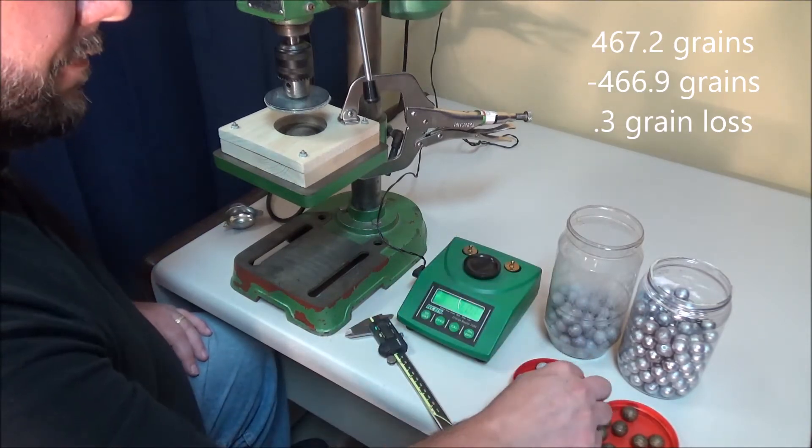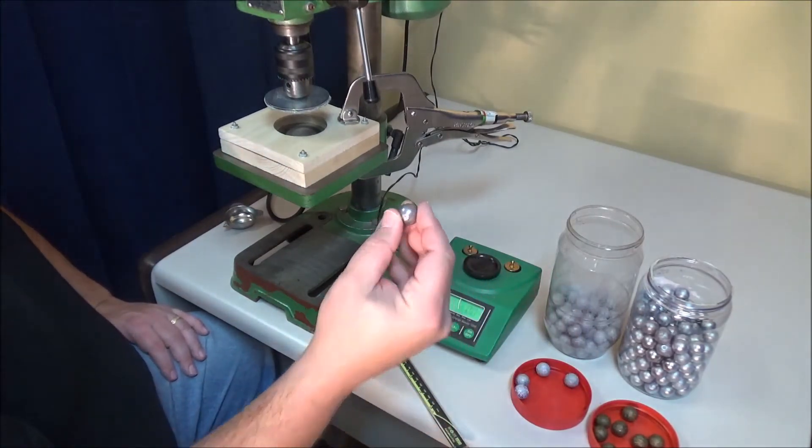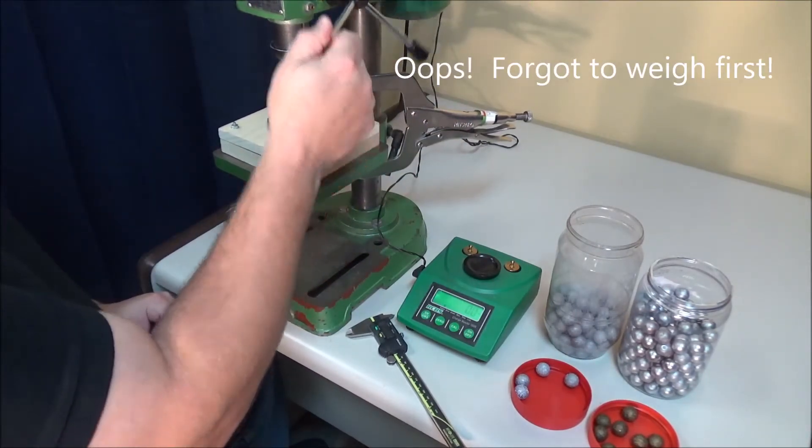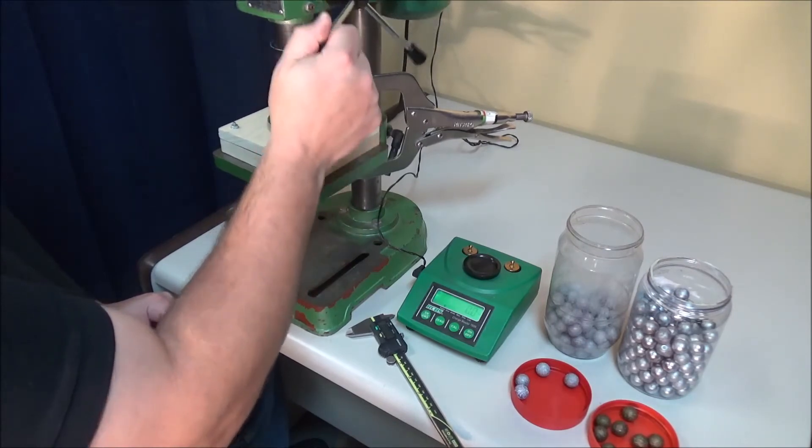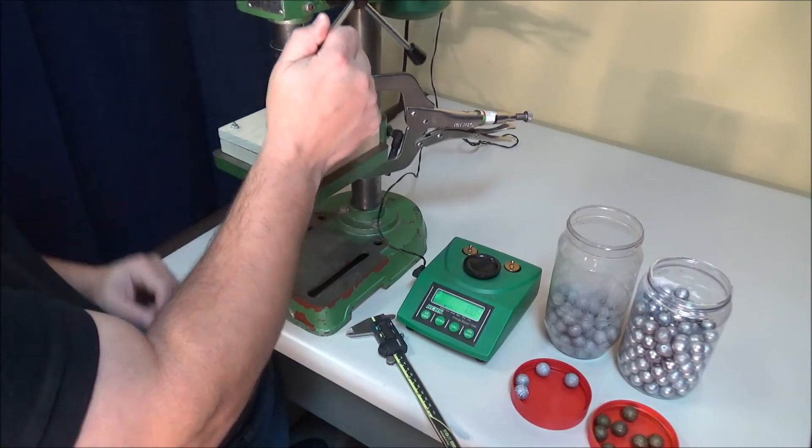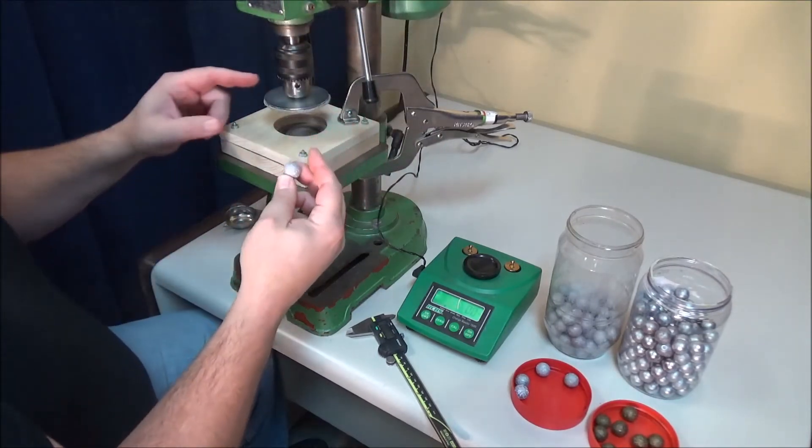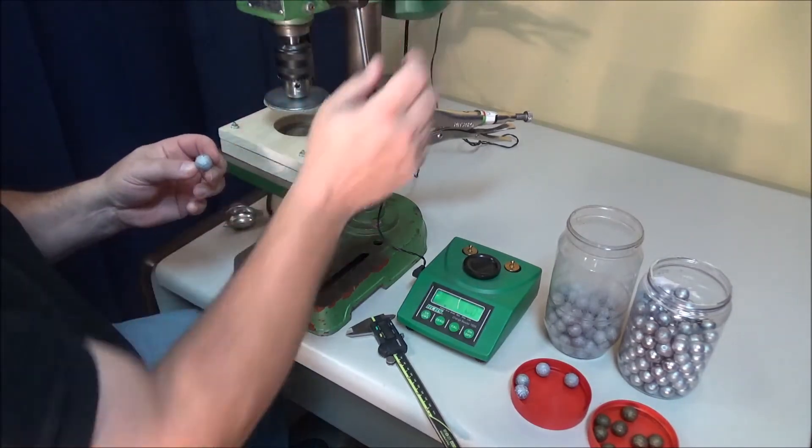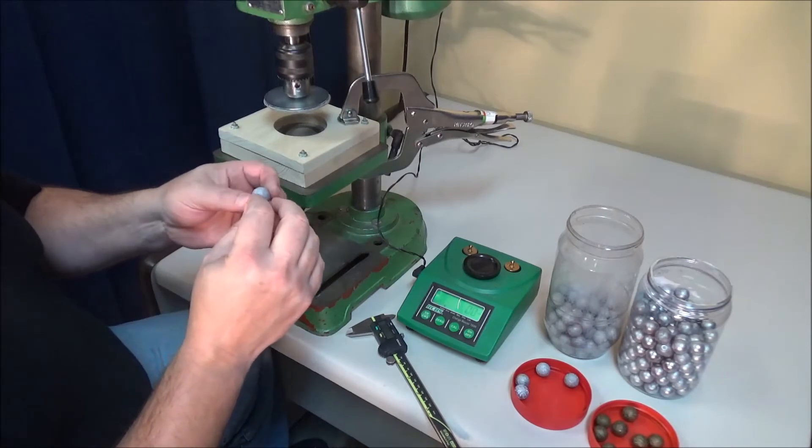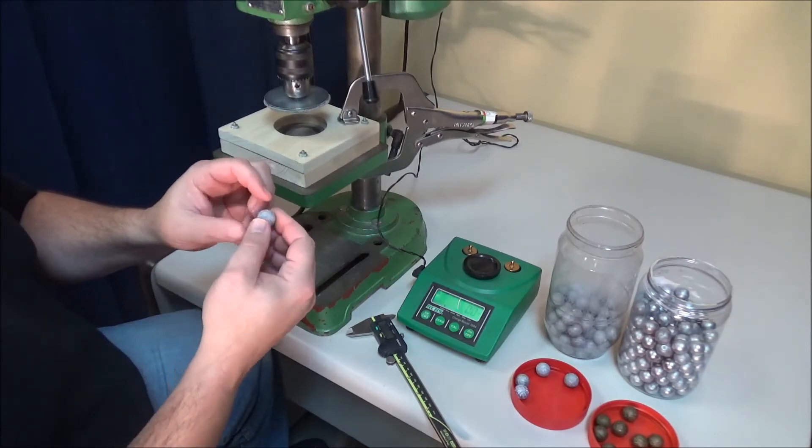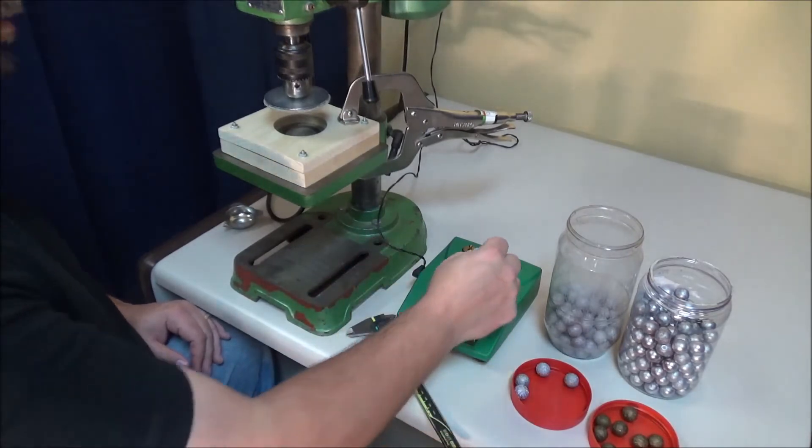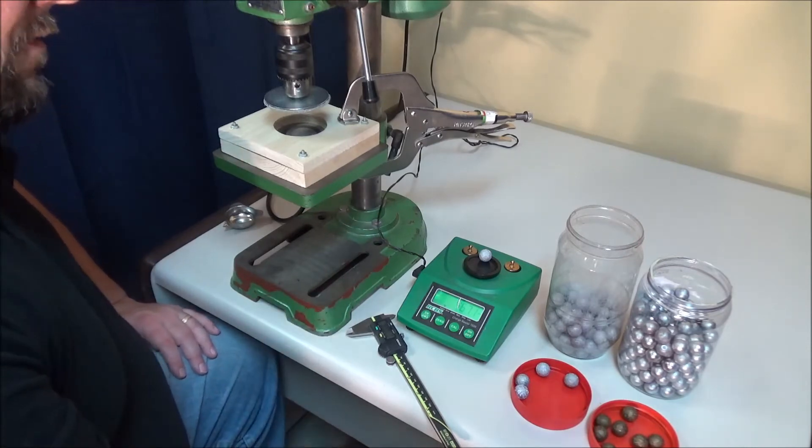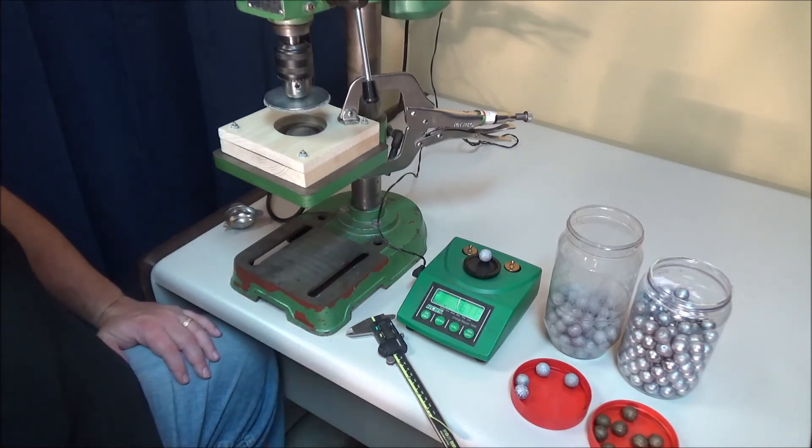Got another lead one here, pure lead. And of course, when you're using pure lead, you want to make sure you don't, it just takes a light touch when you're doing pure lead. Otherwise, you'll roll these things out around. You'll turn them into little sausages instead of round balls. But there's another lead one. And I don't remember if I even weighed it when we got started there. Anyway, 467.1 and whatever it was to start out with there.